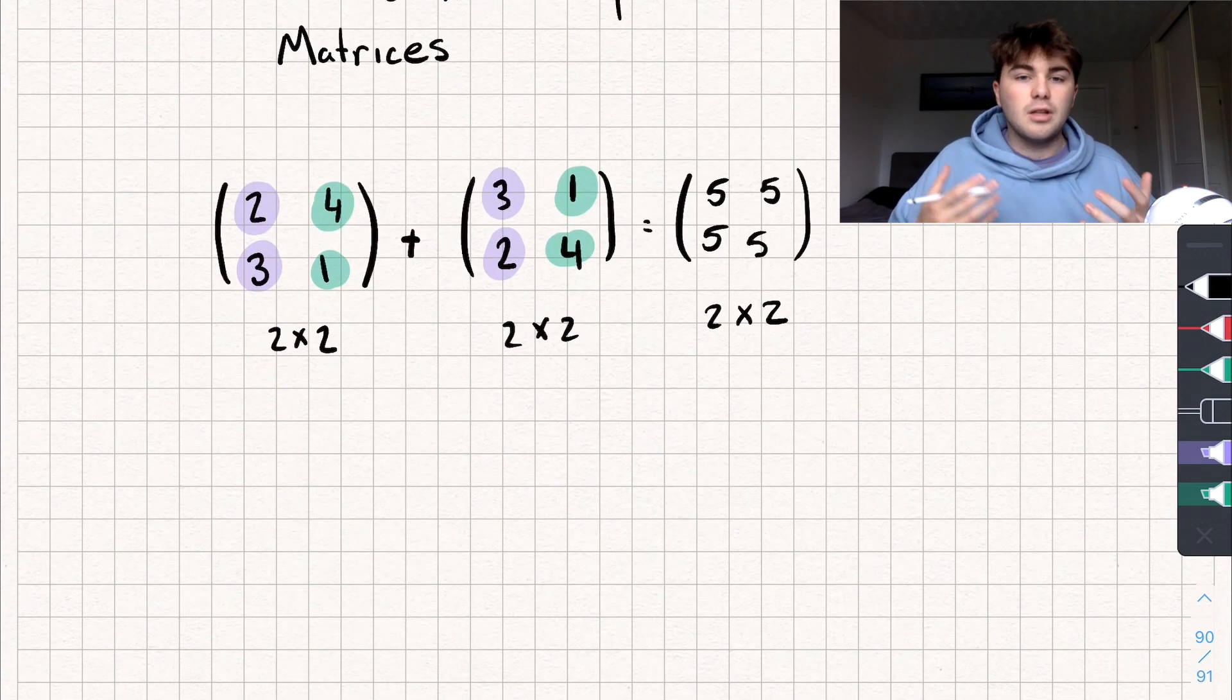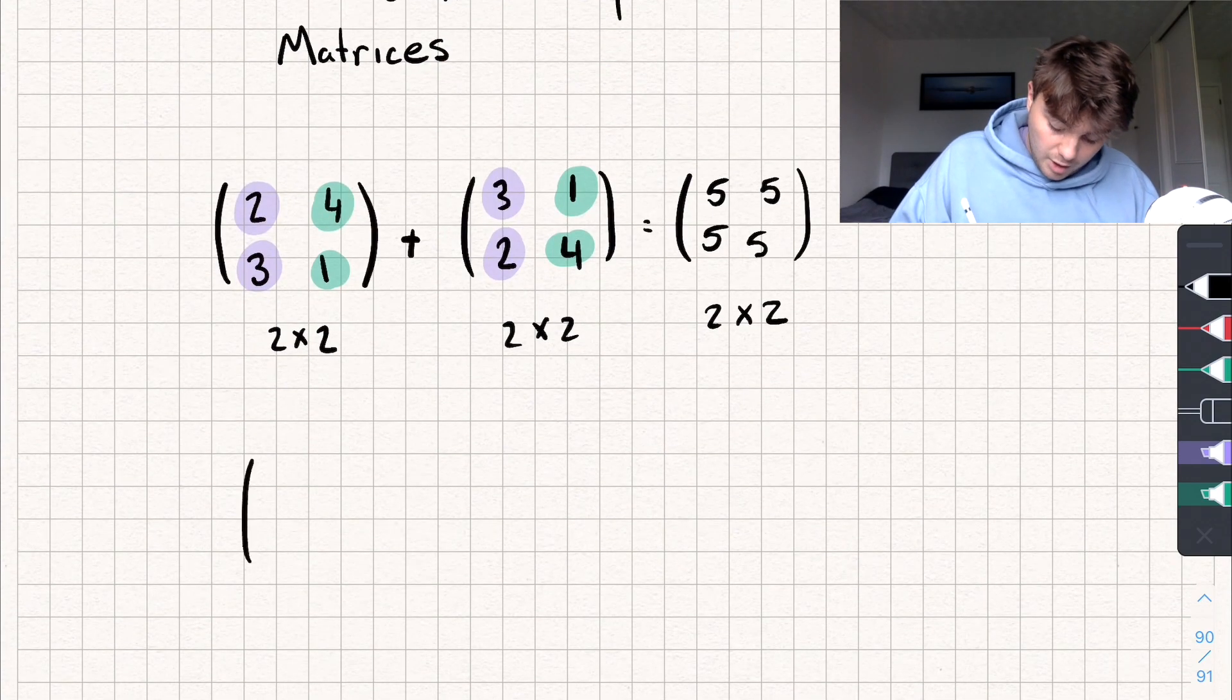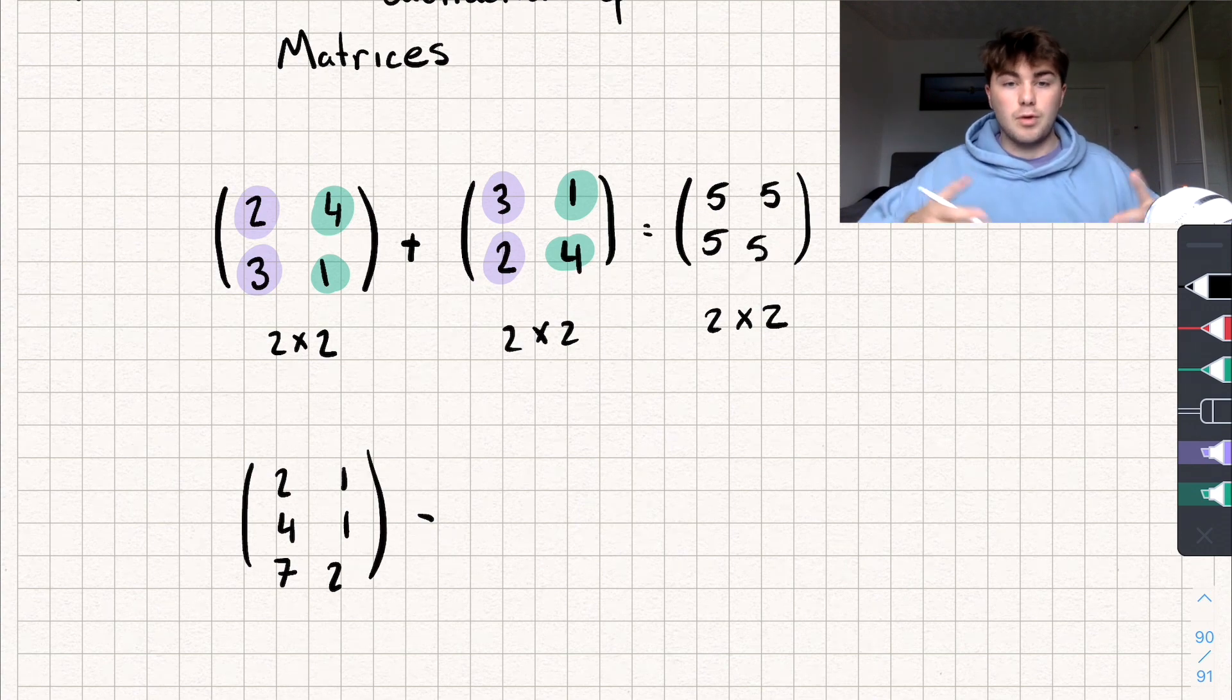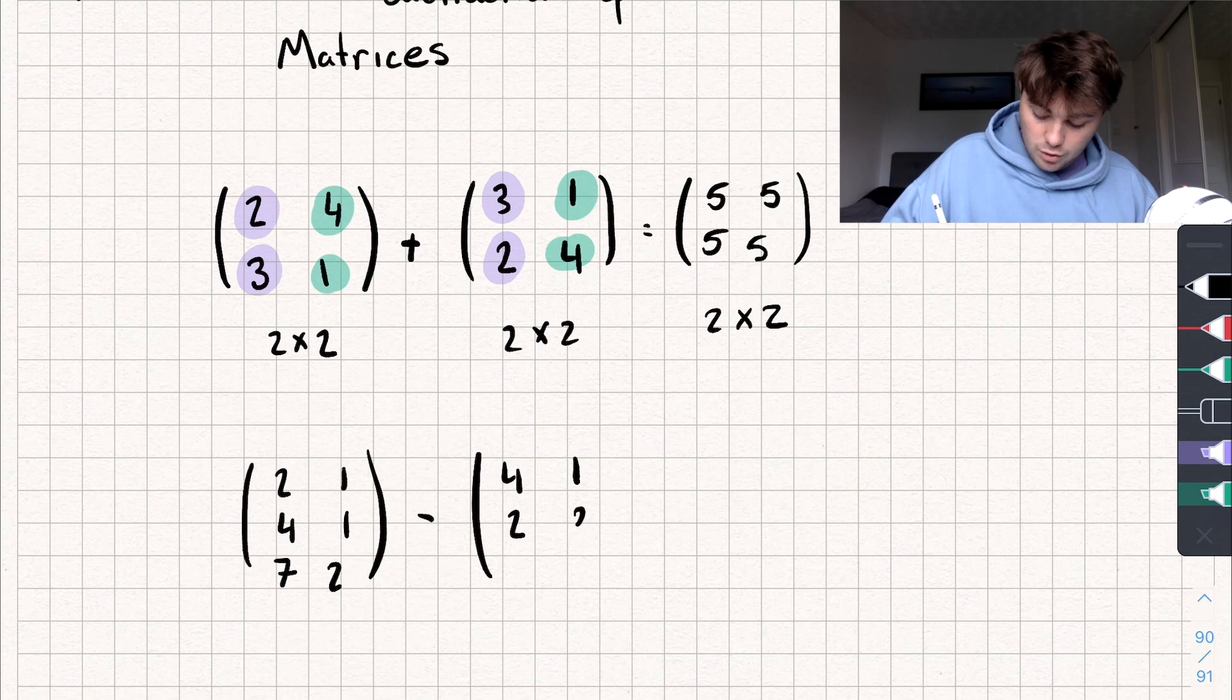So now let's do subtraction and let's do a different size matrix. Let's do a 3 by 2 matrix, say this one here. There we go. And so I can only subtract this from another 3 by 2 matrix. So let's pick this one here, 4, 1, 2, 3, 7, 1.